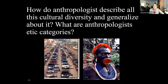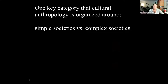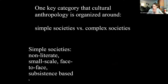What are anthropologists' terms and concepts for talking about different types of cultures? One key analytical distinction anthropology is organized around today is this idea of simple versus complex societies. It's not a value judgment — it doesn't mean better, more progressed, or superior by any means. Simple refers to societies like the Kung and others we'll talk about throughout the class. They tend to be smaller populations, face-to-face, where everyone knows everyone else.